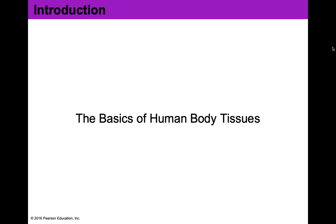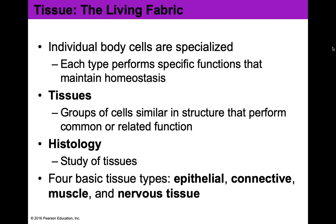So we have basic human body tissues. There are four different types that we're going to be focusing on in this chapter. The first one is epithelial tissues. So we know that our body is made of cells and these cells work together to complete tasks and form tissues. Our tissues make organs, organs make organ systems, and so on to make up our 12 main body systems that keep us alive and functioning and keep us in homeostasis.